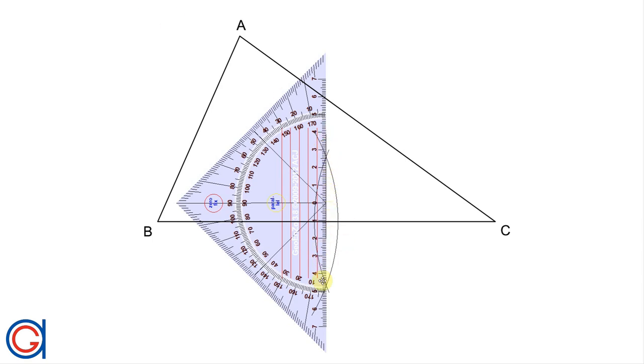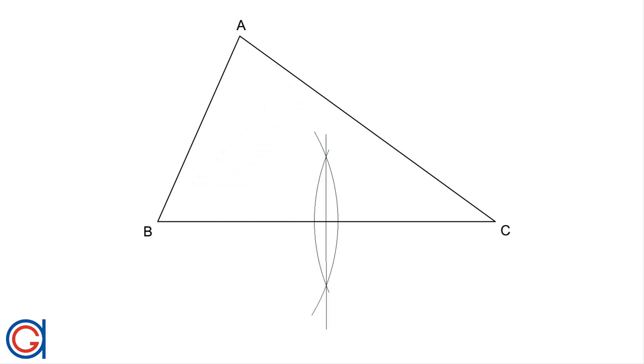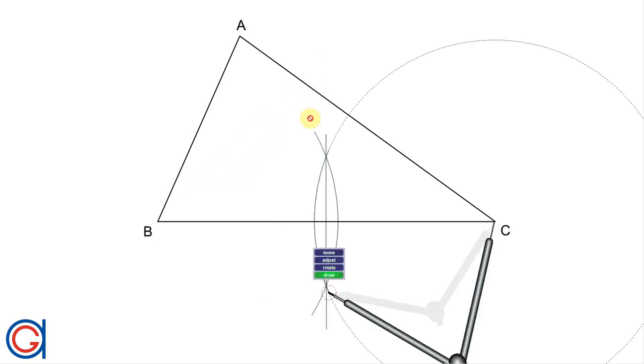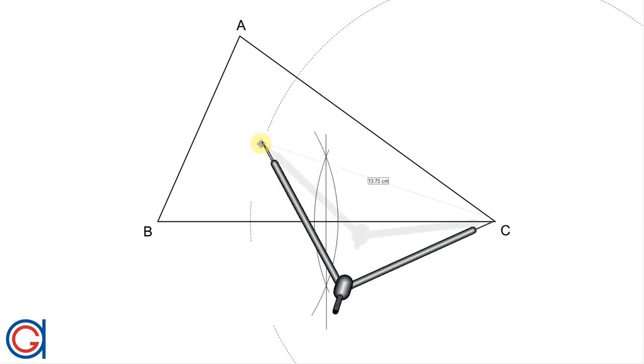So here we have the perpendicular bisector of the line segment BC and now we are going to repeat this process with the line segment AC.